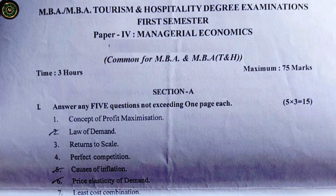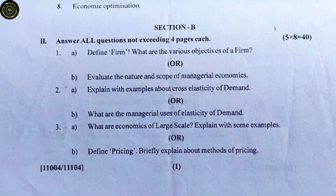Section A questions: 1. Concept of profit maximization. 2. Law of demand. 3. Returns to scale. 4. Perfect competition. 5. Causes of inflation. 6. Price elasticity of demand. 7. Least cost combination. 8. Economic optimization. Section B: Answer all questions, not exceeding four pages each. Five times eight equals 40 marks.